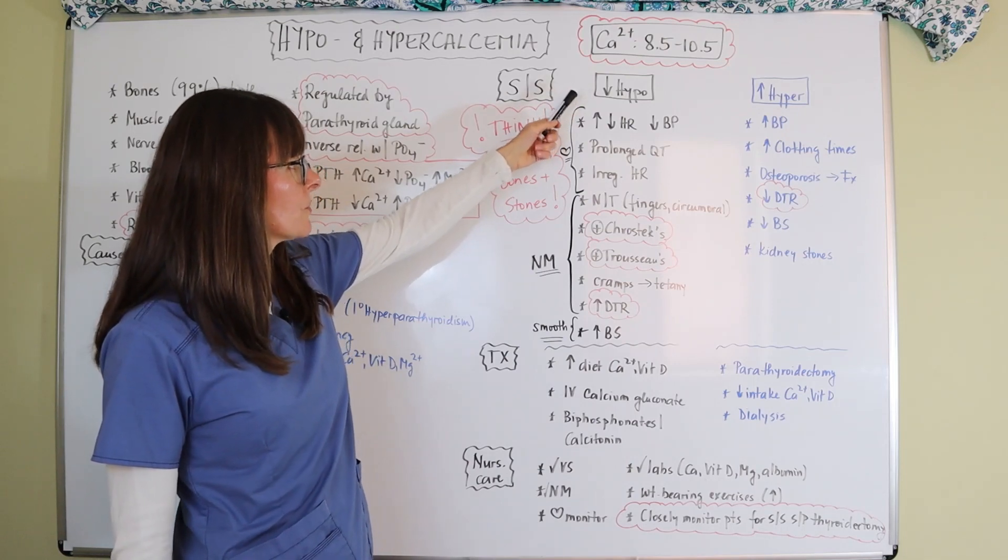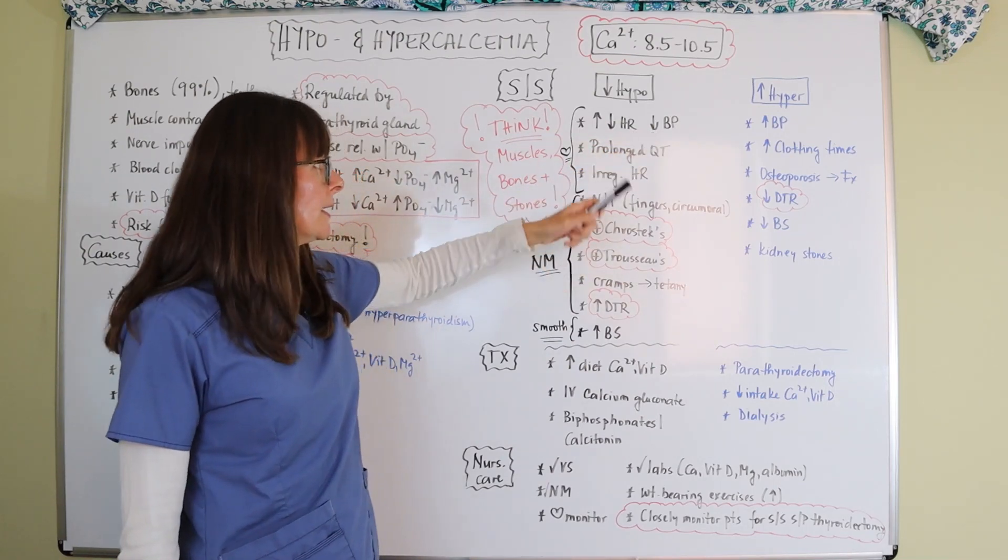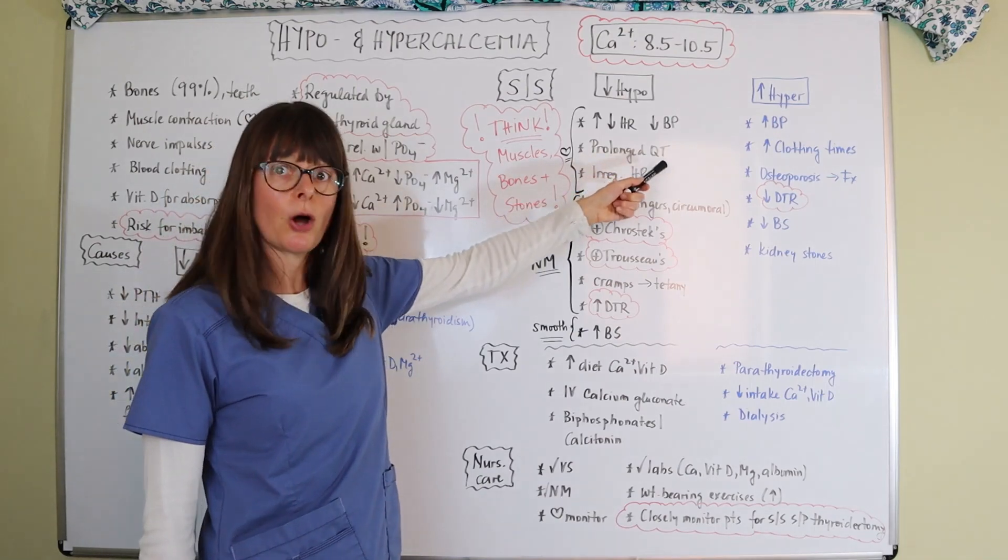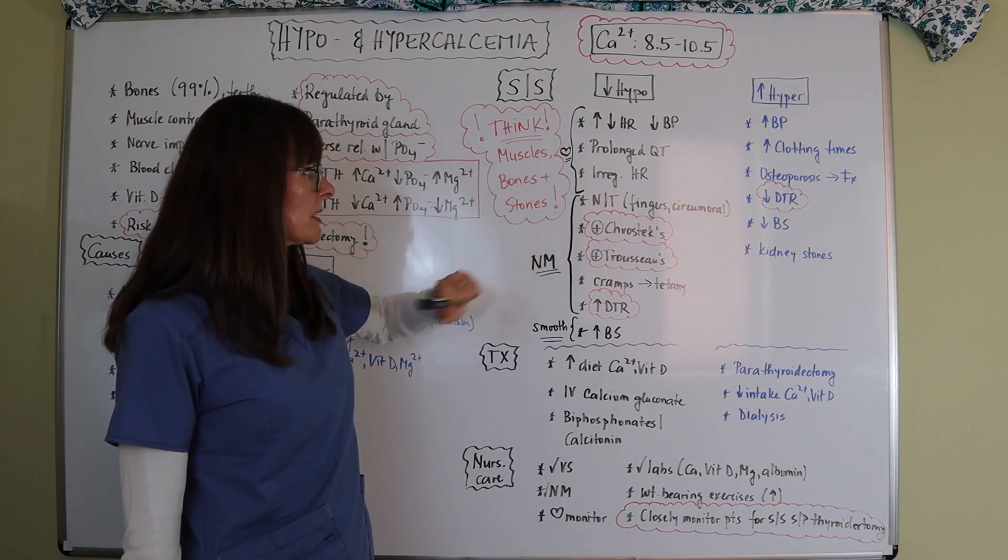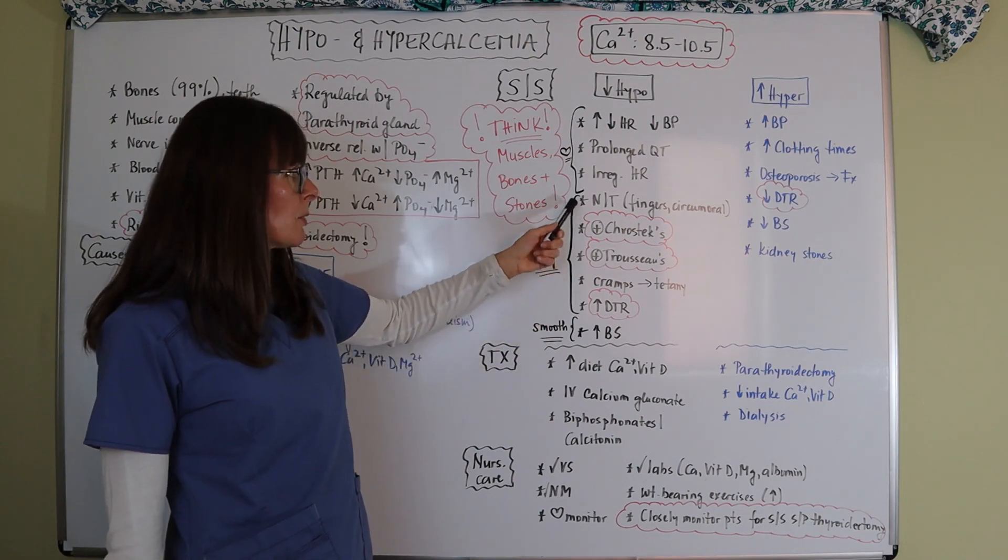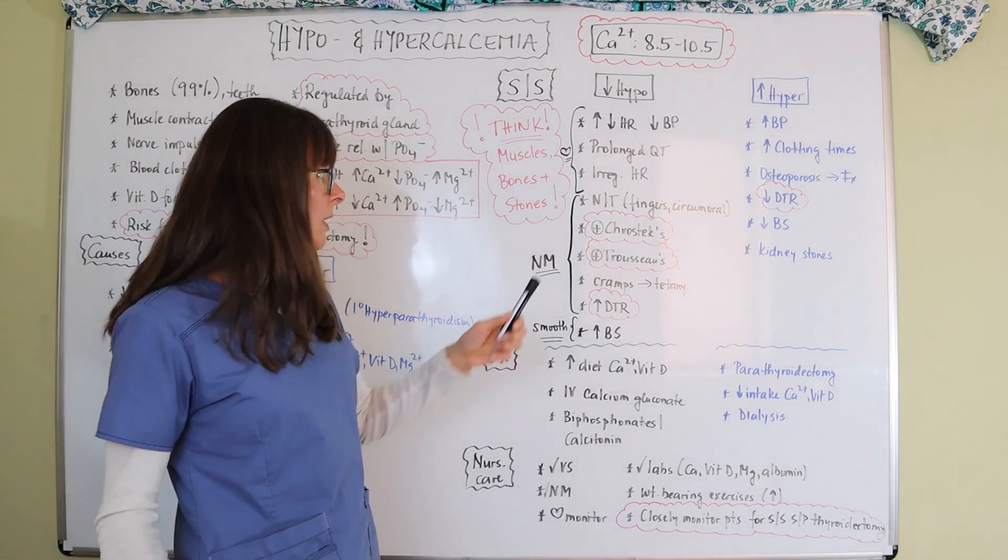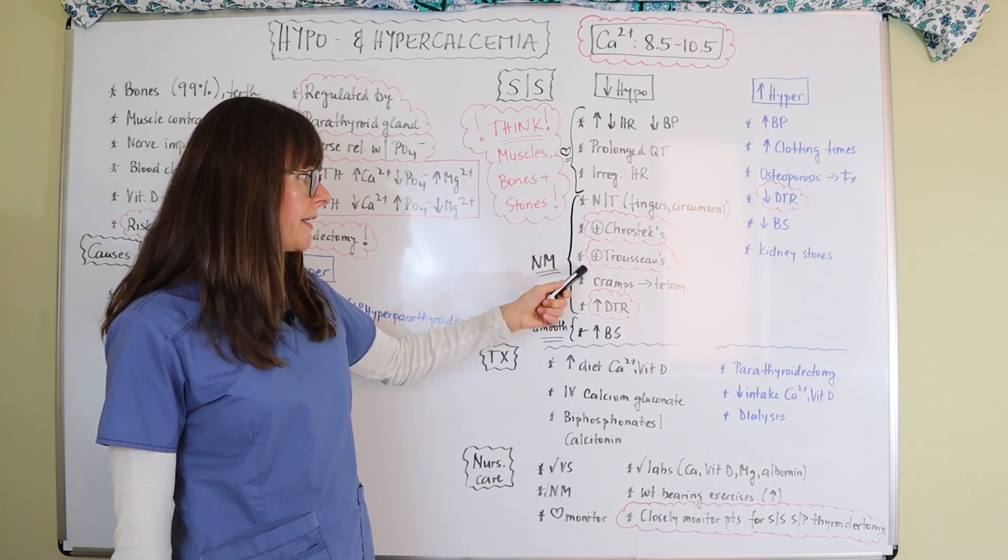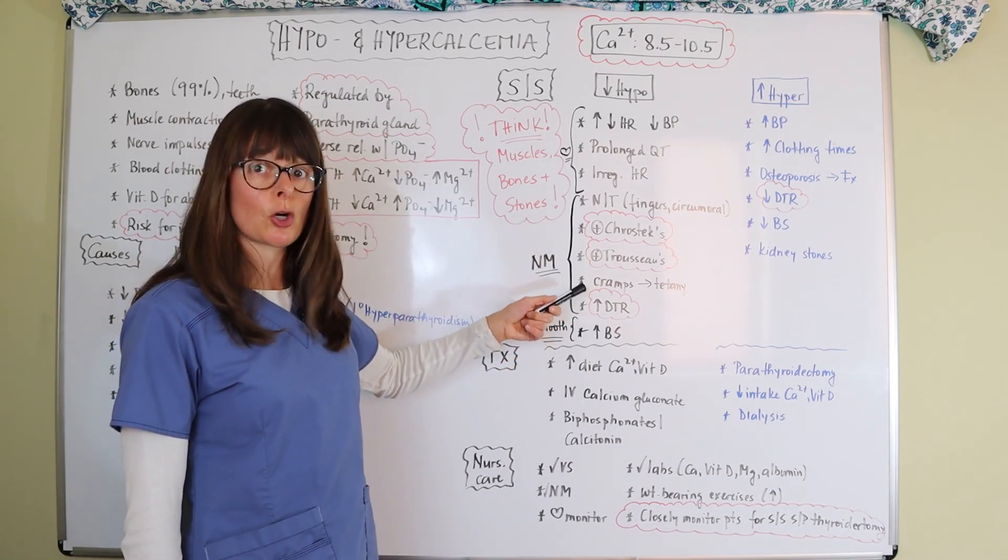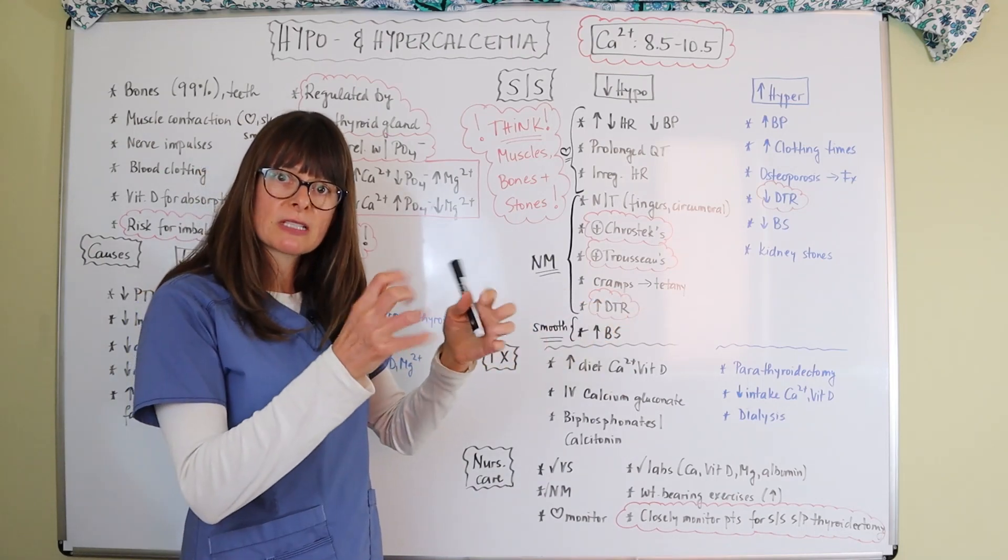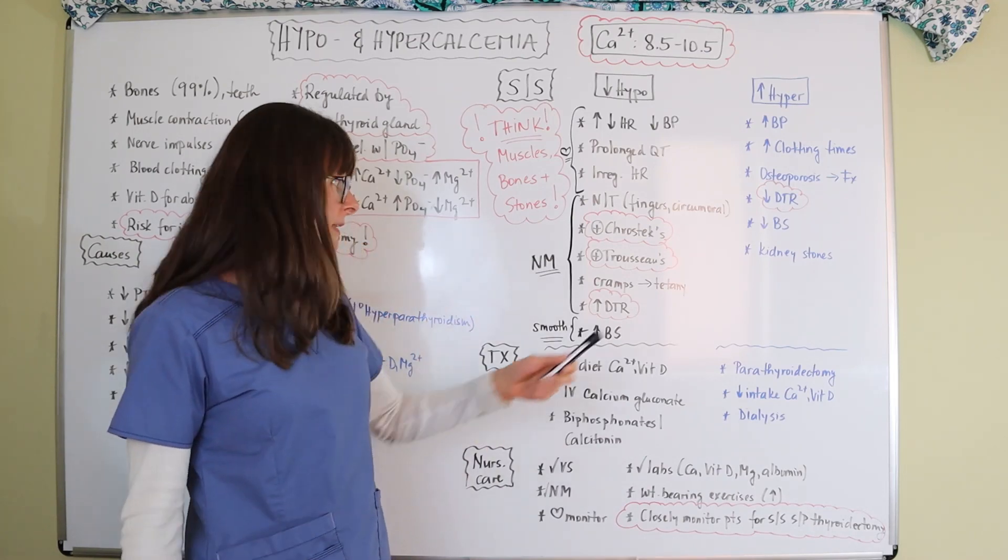So when we have low calcium levels, it can either lead to brady or tachycardia, but it'll most likely lead to hypotension. It can also lead to a prolonged QT interval on the EKG, as well as irregular heart rates. And that all pertains to the cardiac muscle. Then for neuromuscular or skeletal muscles, hypocalcemia can lead to numbness and tingling, specifically in the fingers and circumoral, so around the mouth. And then the patient might have a positive Chvostek or Trousseau sign. And watch my separate videos about those if you're not familiar with these terms. Hypocalcemia can also lead to muscle cramping and all the way to tetany, where the neuromuscular junction is just constantly contracting. And then the patient has this rigid muscle that's considered tetany.